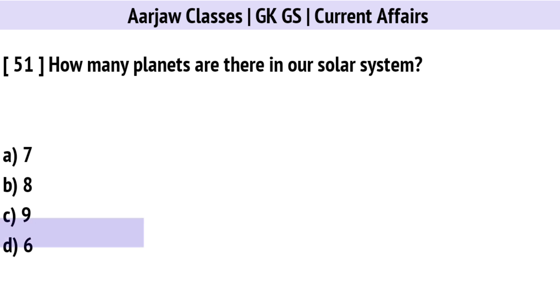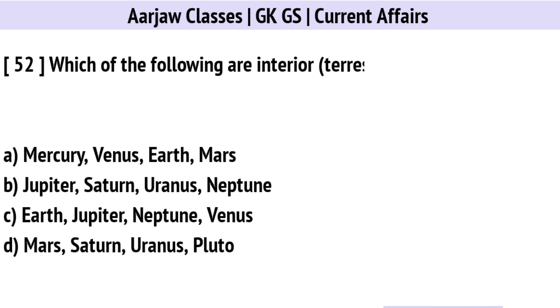How many planets are there in our solar system? Correct option is B: 8 planets.